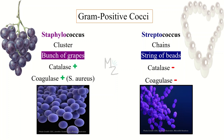Staphylococcus is catalase positive while streptococcus is catalase negative. For those of you who are not familiar with catalase: catalase is an enzyme released by certain bacteria. In the catalase test, bacteria that release catalase convert hydrogen peroxide into water and oxygen, and that oxygen is responsible for forming bubbles.